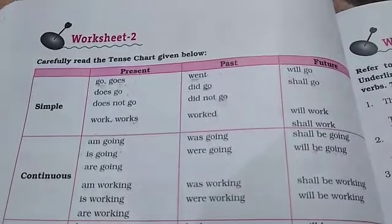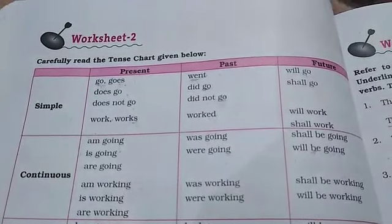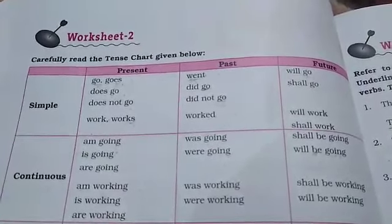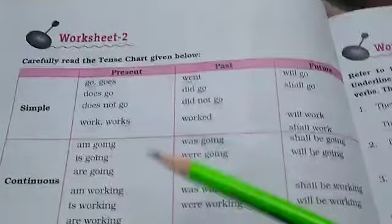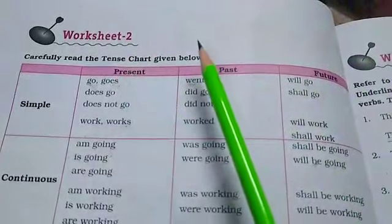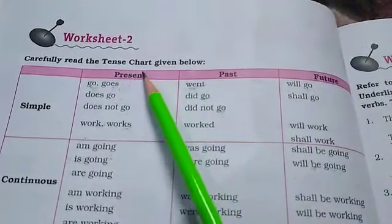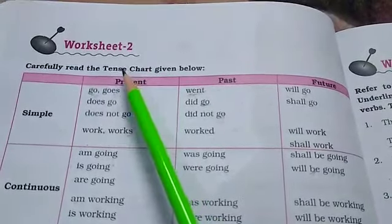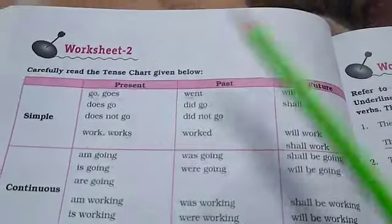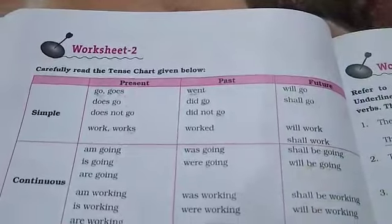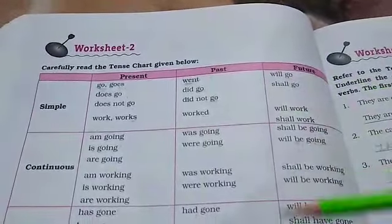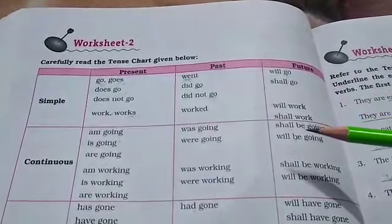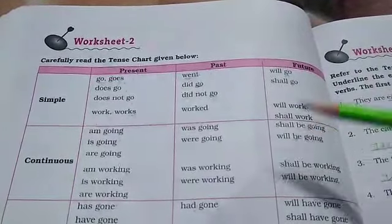Good morning students. Chapter 5, Tenses Part 1, page number 66. Today we are going to start Worksheet 2. In this worksheet you have to understand the tense chart. Through this tense chart you will be able to understand how to construct a proper sentence with the appropriate verb form.